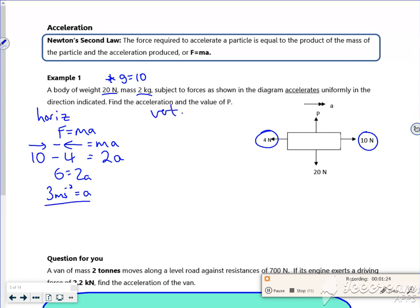So let's look vertically now, using F equals MA. Now it's in equilibrium vertically because it's not floating off the surface, which isn't shown, and it's not ploughing through it. So I say that up minus down is equal to 0. So P minus 20 is equal to 0. So P is 20 Newtons.